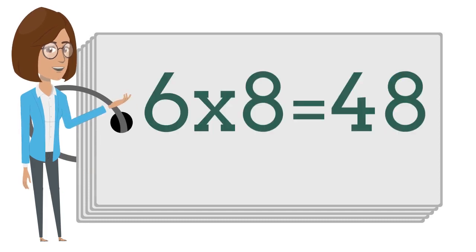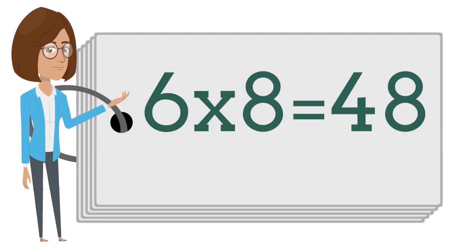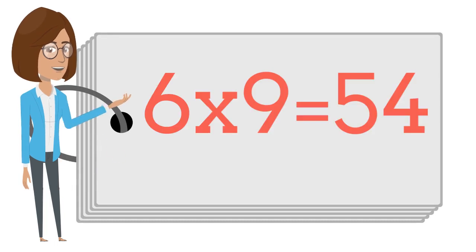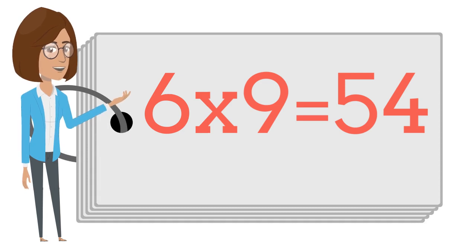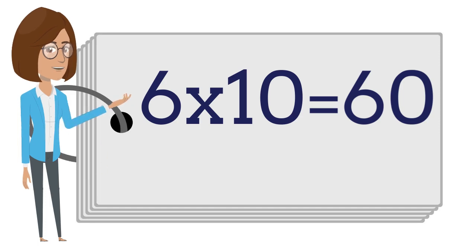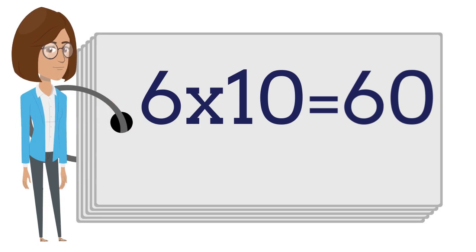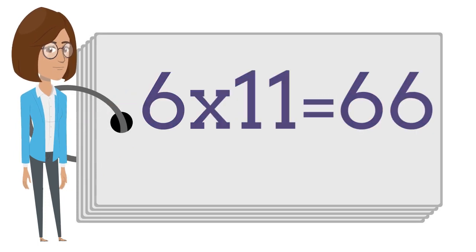Six times eight is forty-eight. Six times nine is fifty-four. Six times ten is sixty. Six times eleven is sixty-six.